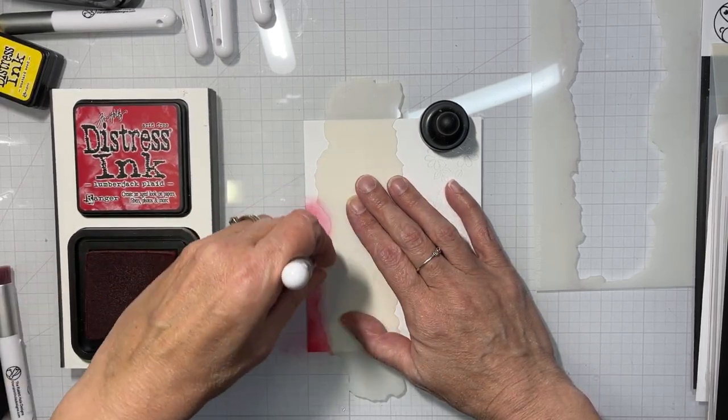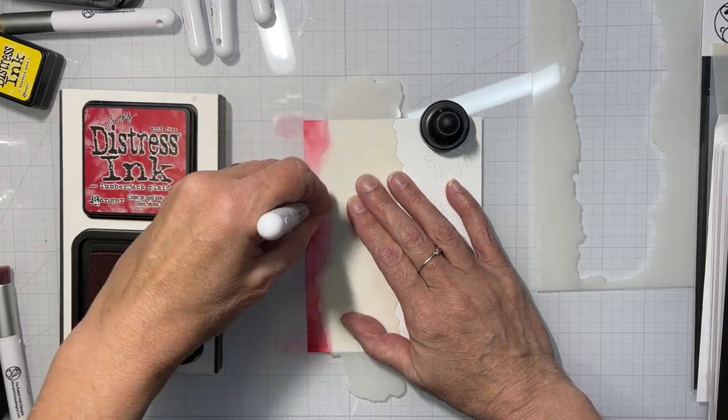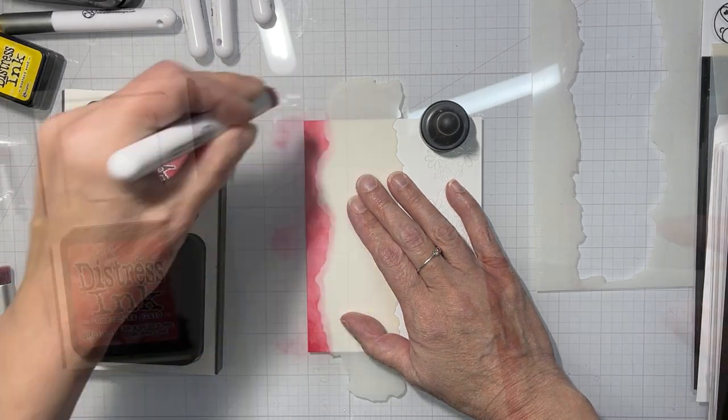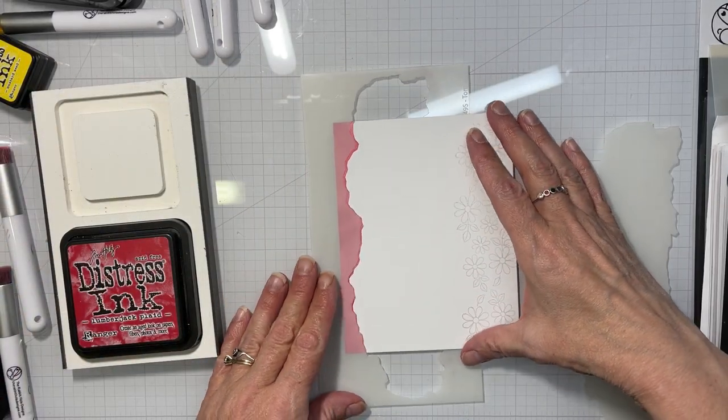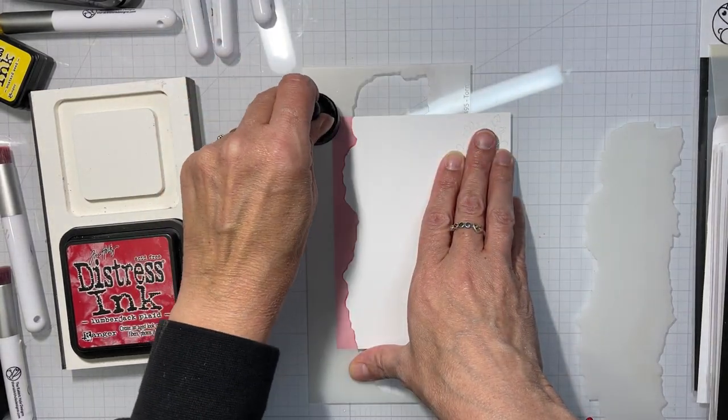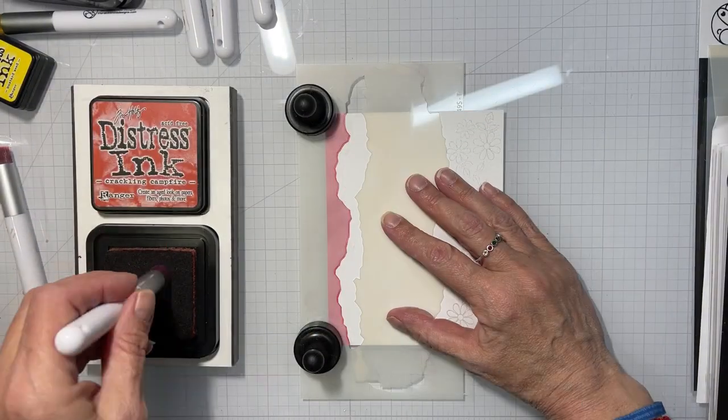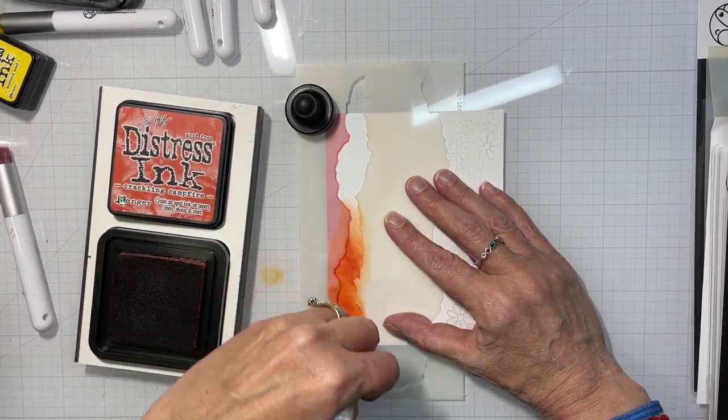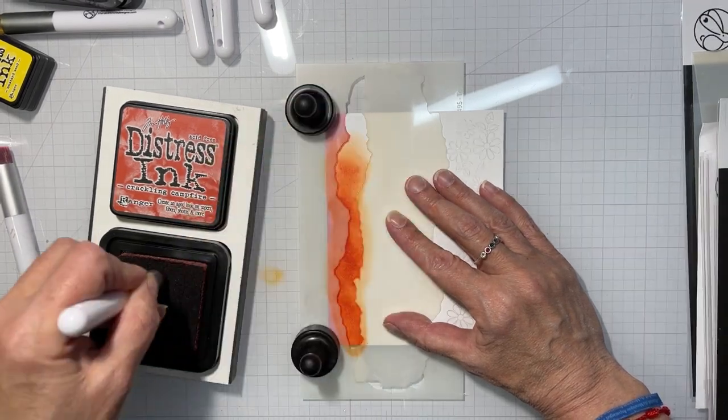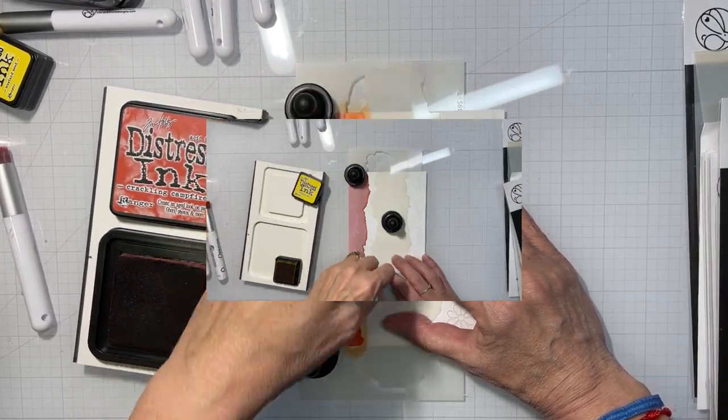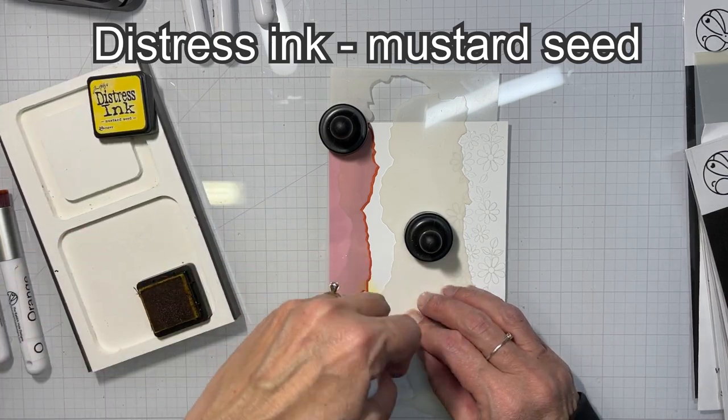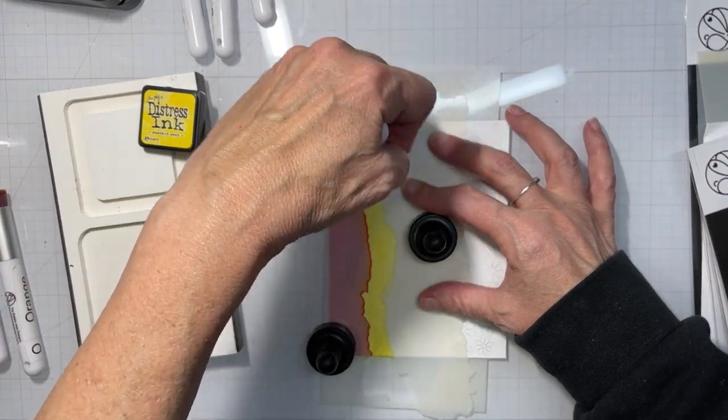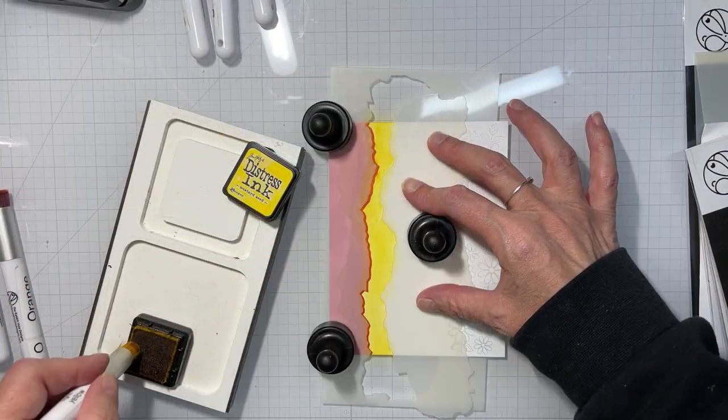So I heat set those and now we're going to use the torn paper stencil and we're going to make a rainbow down the card. Now it looks like it's up and down the card, but we're moving, this card is going to be horizontal. I'm just, this is easier to ink than this way for me. So we're going to use the stencil to mask and to create the lines for the colors. So I just make sure that I match up the stencil to cover the place I just ink blended. And then I'll go in and create a line with the other piece, the inside piece.